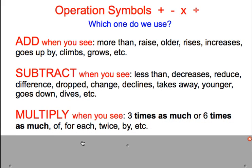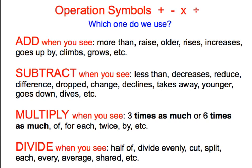You are going to use the multiplication operation symbol when you see words such as three times as much, six times as much, of — we know 'of' means to multiply — for each, twice, or by.